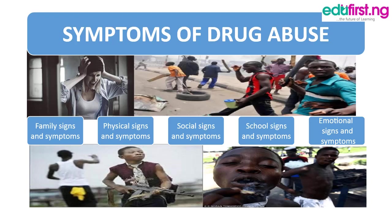Secondly, we have physical signs and symptoms. This includes frequent minor illness such as sluggishness, frequent naps, and smelling of marijuana, alcohol, and mints. Number three is social signs and symptoms: over-popularity and excessive greeting in a noisy way with friends, and breaking of rules and regulations.